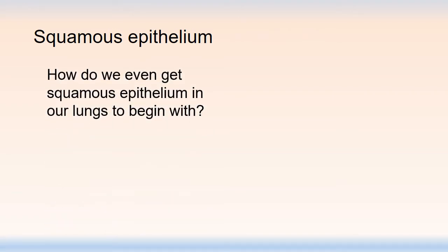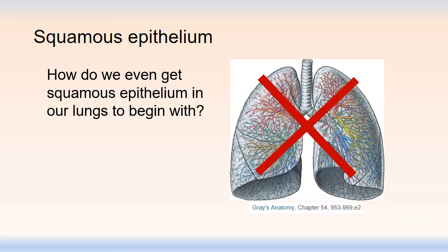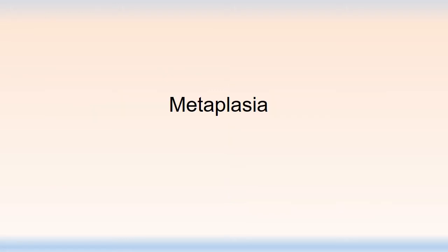The big question is how do we get squamous epithelium in our lungs to begin with? For squamous carcinoma to grow, there has to be squamous epithelium somewhere. Looking at a diagram of the trachea and lungs, where would you expect squamous epithelium to occur normally? Nowhere — there should be no squamous epithelium in this area. But there is an adaptive process where one epithelium can change into another. You probably already know the name of it: metaplasia. Metaplasia has to occur for us to get squamous epithelium in our respiratory system.